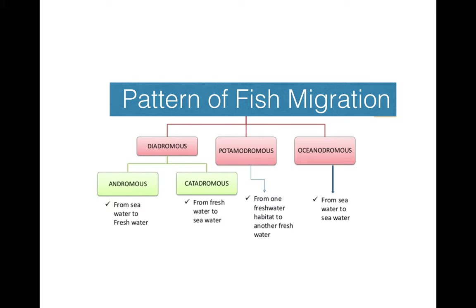When fish move from sea water to freshwater, that is anadromus migration. When fish move from freshwater to sea water, it is catadromus fish migration. Potamodromus migration is the migration of fishes from one freshwater habitat to another freshwater habitat. Oceanodromus is the migration of fishes from sea water to sea water — within the sea only. Now I will explain all these migrations in detail one by one.